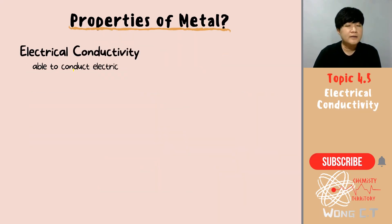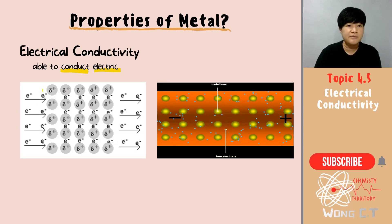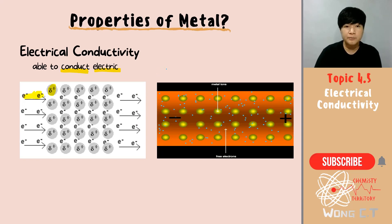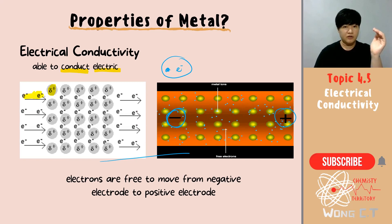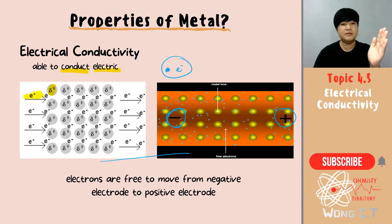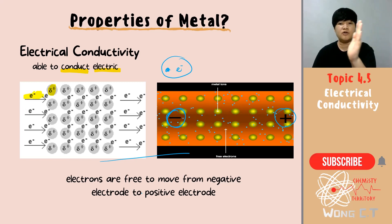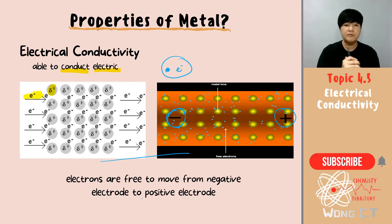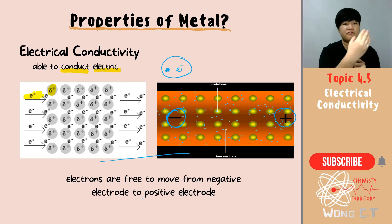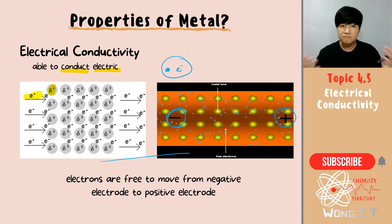Why does metal have the ability to conduct electricity? The same reason: because you have positive charges and electrons moving non-stop in the electron sea model. The electrons carry electricity from the negative terminal to the positive terminal. That is why electricity can be conducted in a metal — because the electrons in the electron sea model are delocalized and moving non-stop, carrying the electrical charge through the metal.